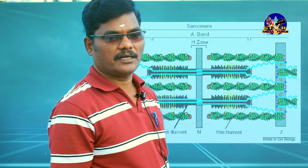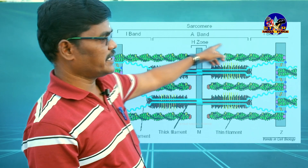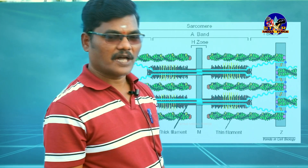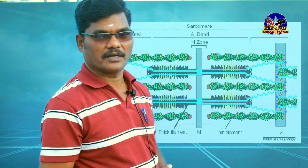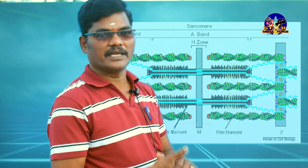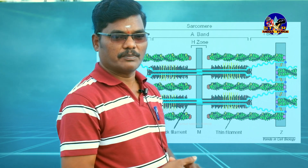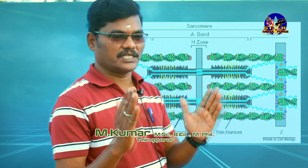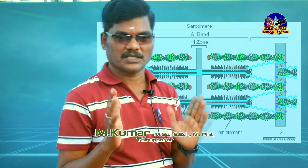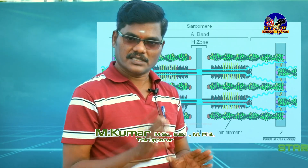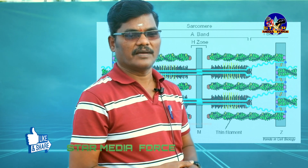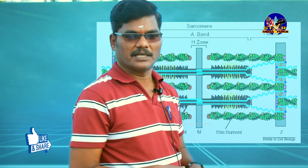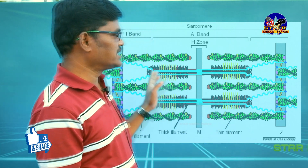Myofibrils also contain contractile elements called the sarcomere. The sarcomere is the structural and functional unit of the muscle fiber. It is the contractile area of the myofibrils — one segment of the rod-like structure is called a sarcomere. The sarcomere is the region of the myofibrils between two Z lines.